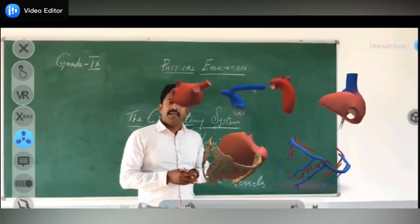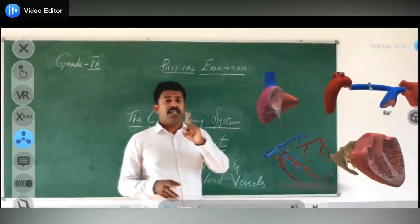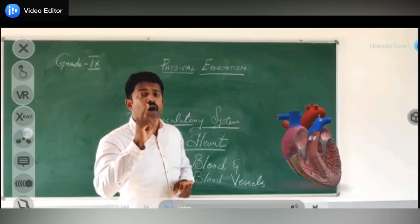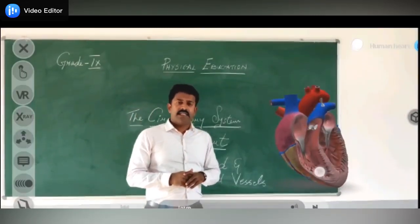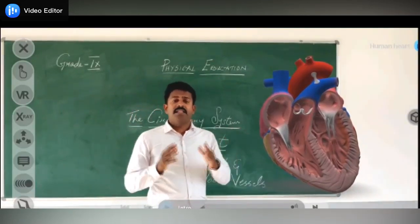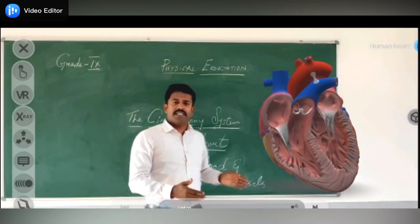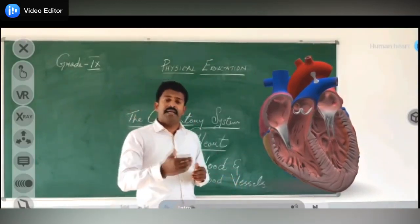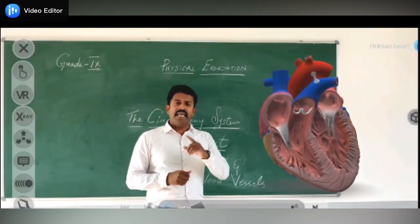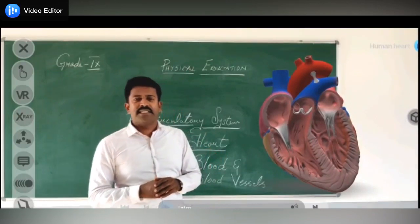In today's class we saw what the circulatory system is and its three major parts: the heart, the blood, and the blood vessels. We explored the first major part — the heart, one of the vital organs of the human body — using AR technology to make the concept easier to understand. We will meet in the next class to explore the other two major parts: the blood and the blood vessels. Thank you so much.